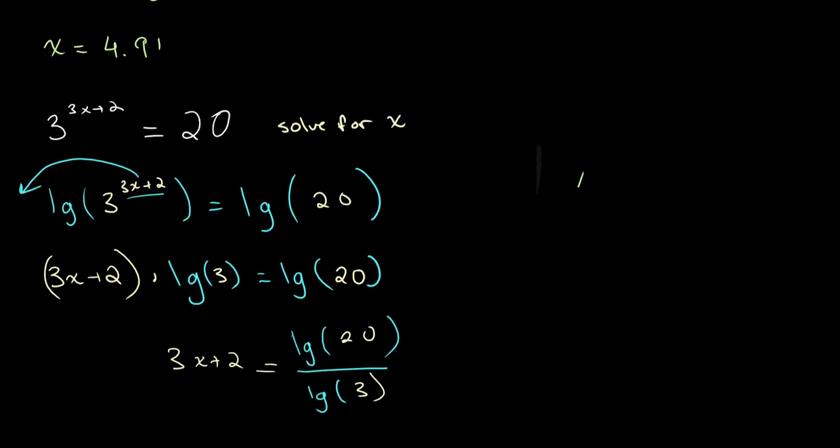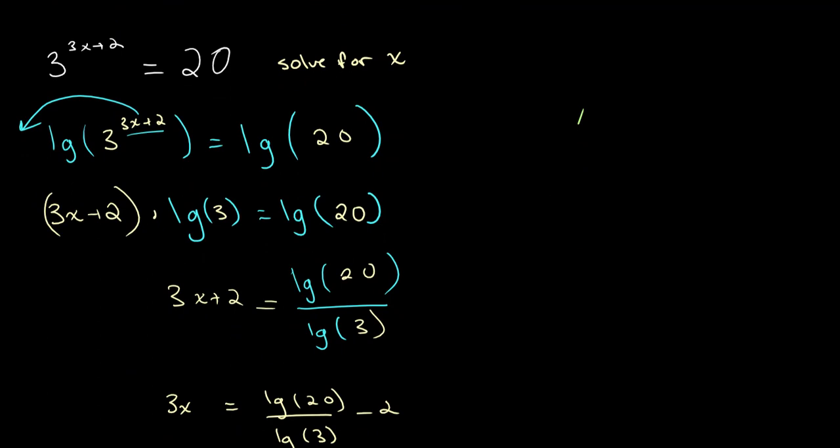So let's look back at what we did. So we didn't know how to solve this equation initially because we were not able to get both sides to have the same base. In order to make this equation easier to solve, we used logarithms. And we randomly chose to take the logarithm or we randomly chose to take lg on both sides. So lg of 3 to the power of 3x plus 2 is equal to lg of 20. And then we used the power rule over here to bring this down. So we get 3x plus 2 times lg of 3 is equal to lg of 20. And from there we solved for our value of x.